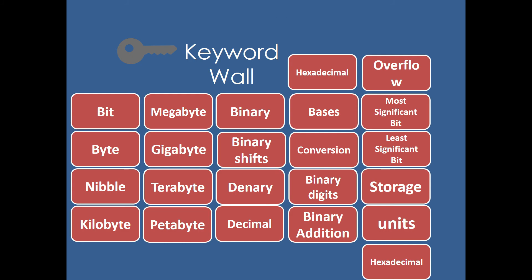Here's our keyword wall. Have a look at our keyword wall. What is the difference between binary and denary? Well, hopefully you should know that denary has 10 different options, 0 to 9, whereas binary only has 2, 0 and 1. That means binary is base 2 and denary is base 10.